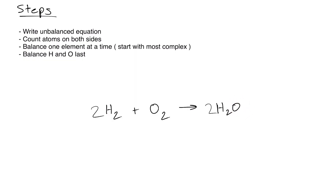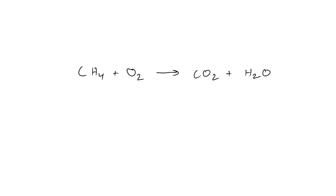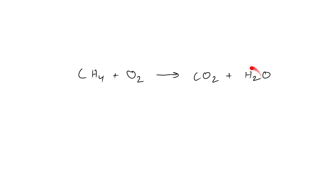Let's try the next problem. We can see that we have one carbon on the left and one carbon on the right. We have four hydrogens on the left and only two hydrogens on the right. So we're going to write a 2 in front of the H₂O, giving us four hydrogens on the right. But that's going to skew our oxygen total — now we have two oxygens on the left and two plus two, four oxygens on the right.